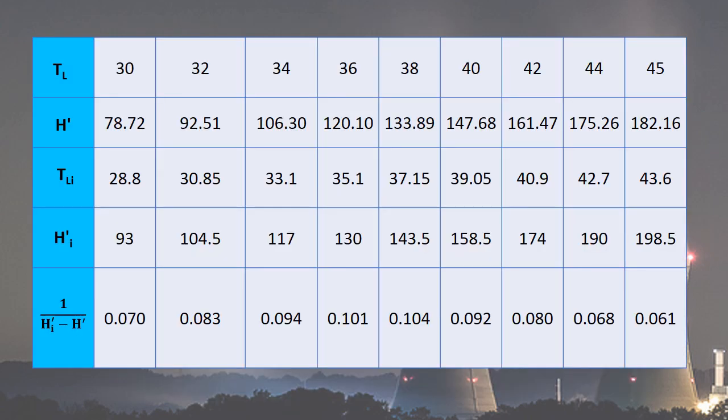Then, construct a table consisting of TL, H prime, TLI, HI prime, and 1 over (HI prime minus H prime), where the values are obtained from the graph.